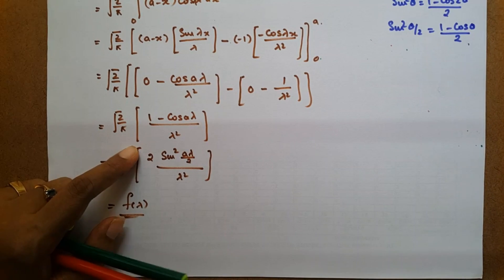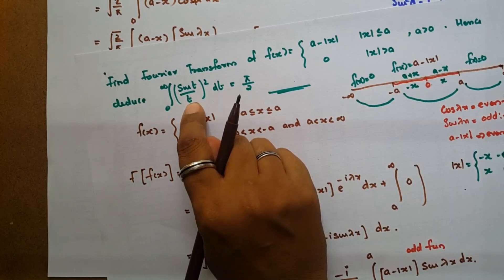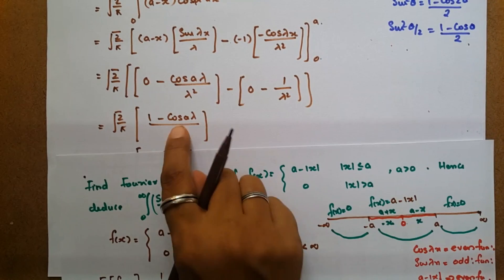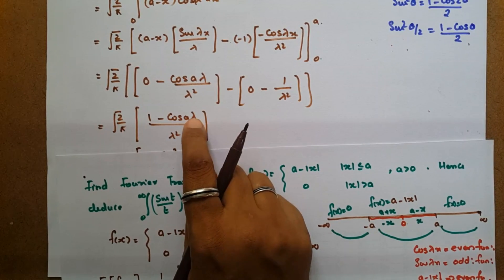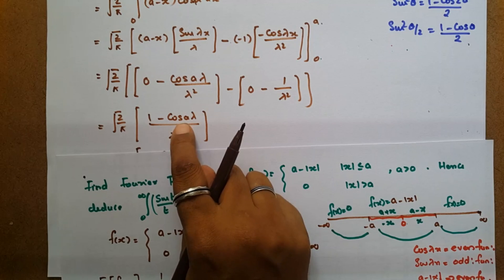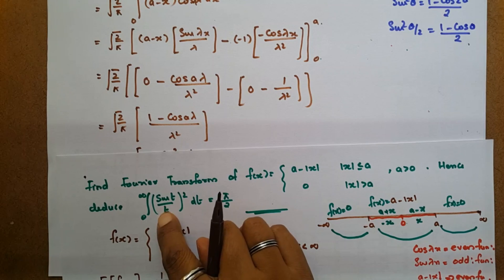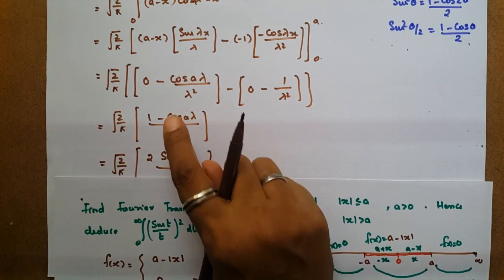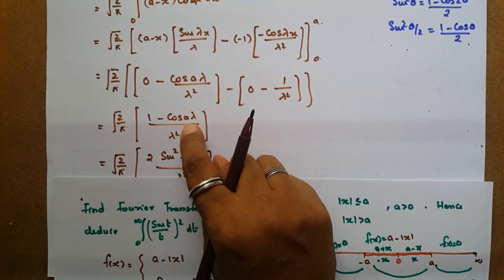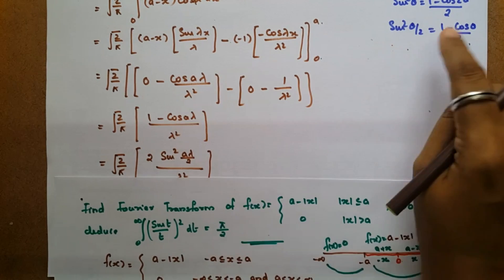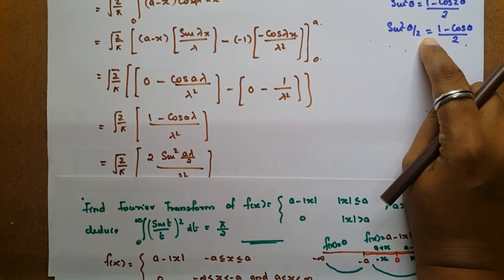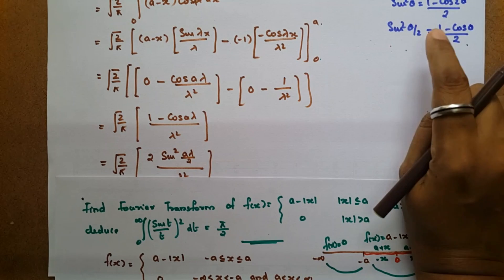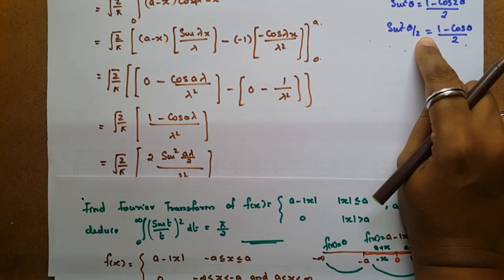Now for the deduction part: we need to deduce the integral of (sin t / t)² dt. We have F(λ) = root(2/π) times 2 sin²(aλ/2) / λ². Using the inverse Fourier transform and substituting, with 1 - cos(aλ) = 2 sin²(aλ/2), we will use the inverse Fourier transform.